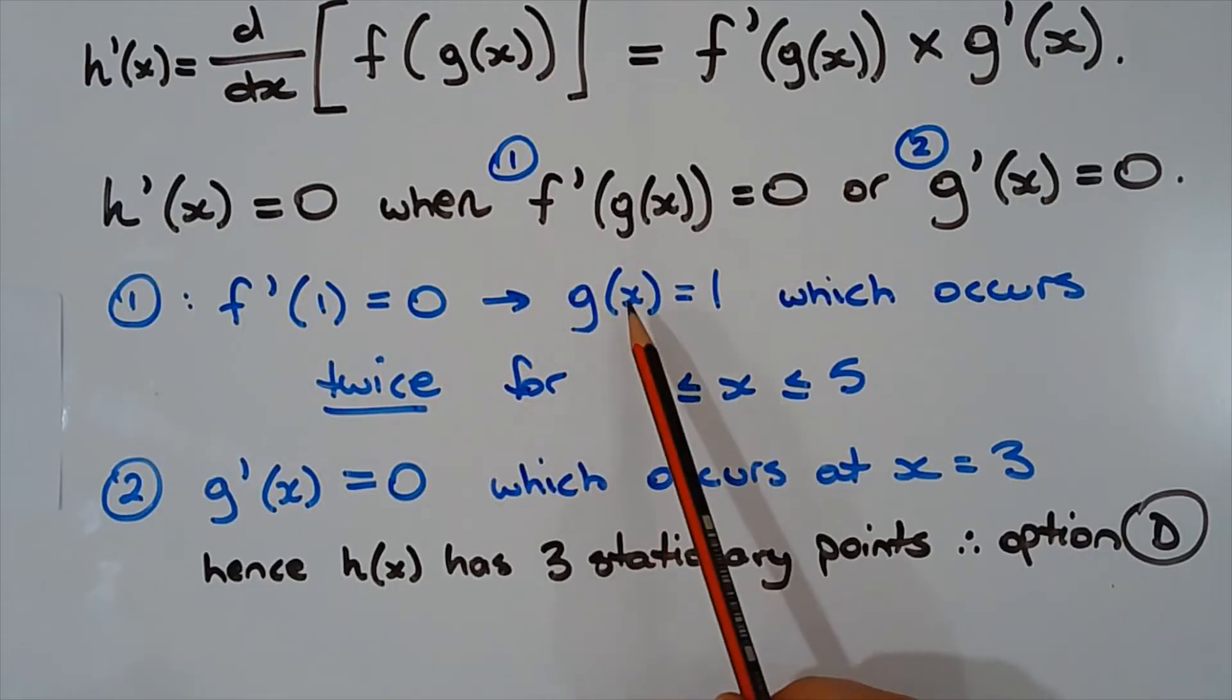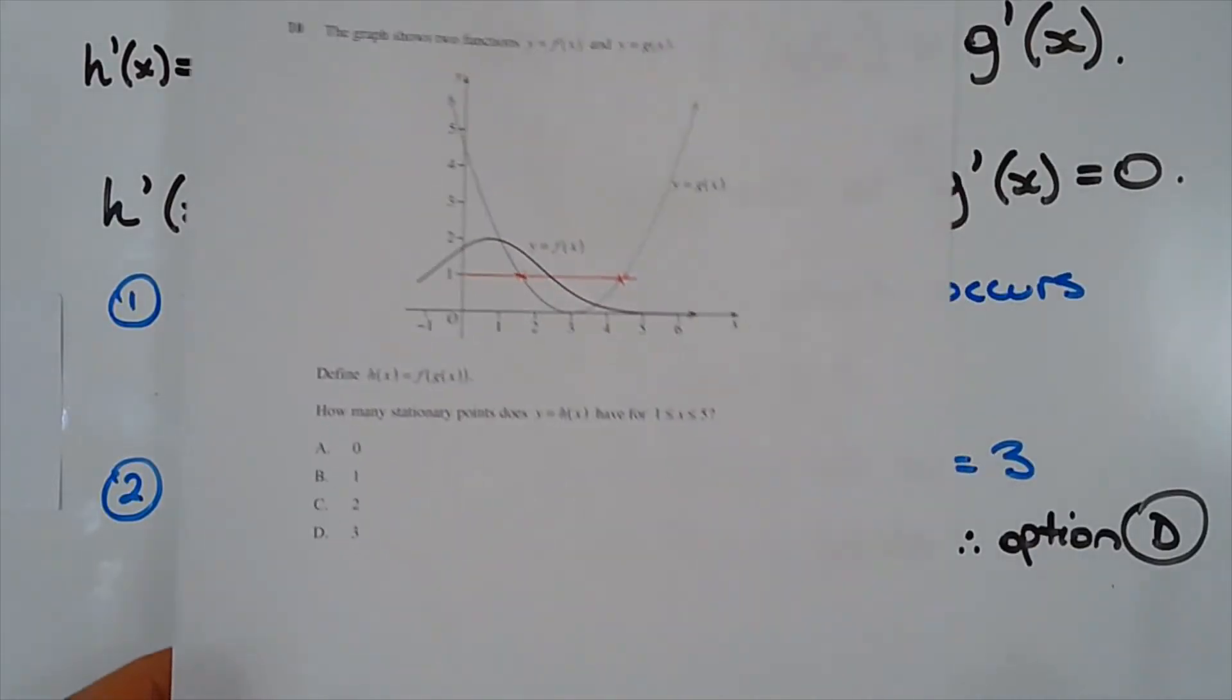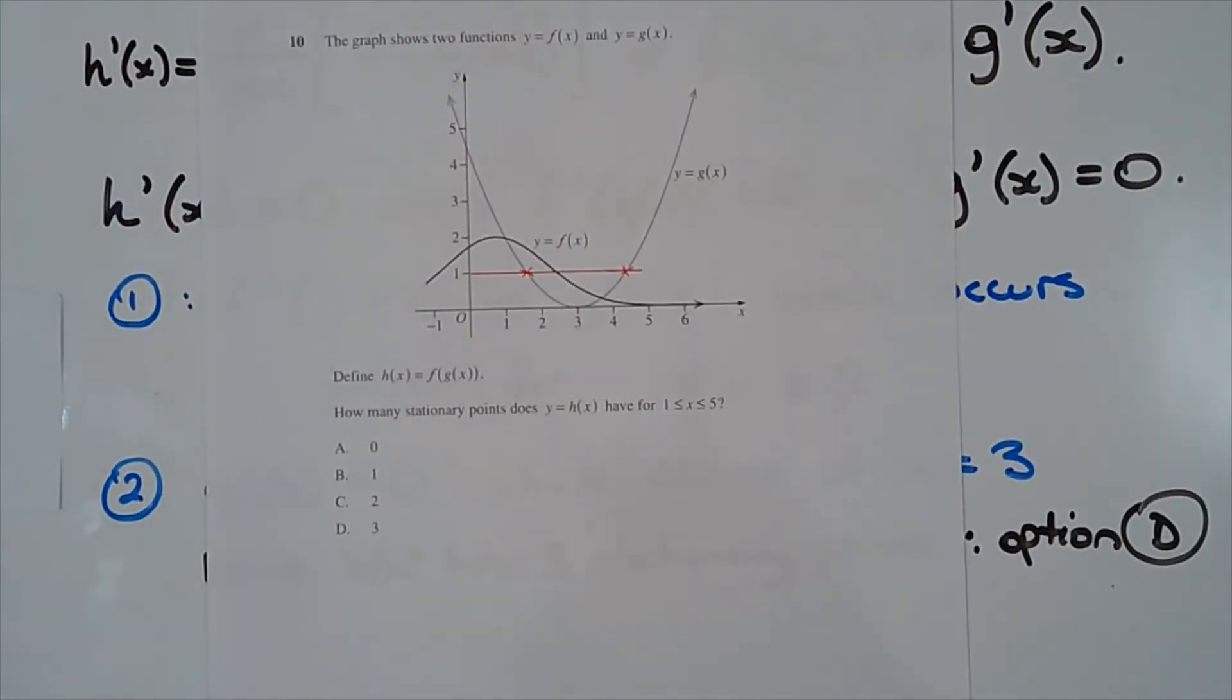Now where does g of x equal 1? That occurs twice in the domain x between 1 and 5. So if I go back to the original graph, I'll mark that in.